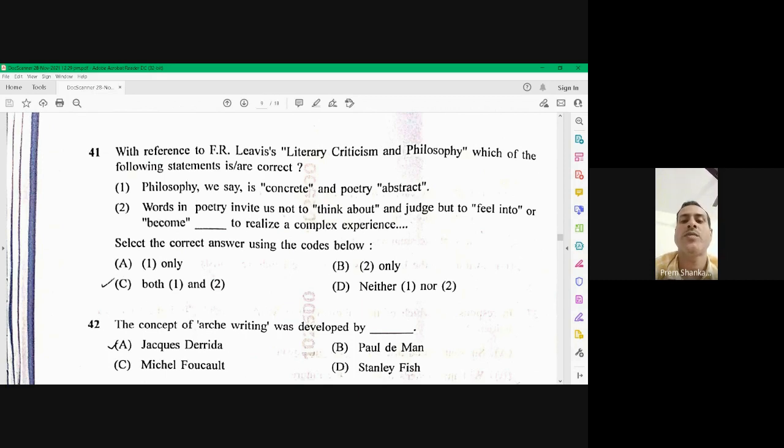Whereas the second option, words in poetry invite us not to think about and judge what to feel into or become. So the second is the right option according to F.R. Levis. So two only is the right option. 41 is B, two only. Second option is the right one.